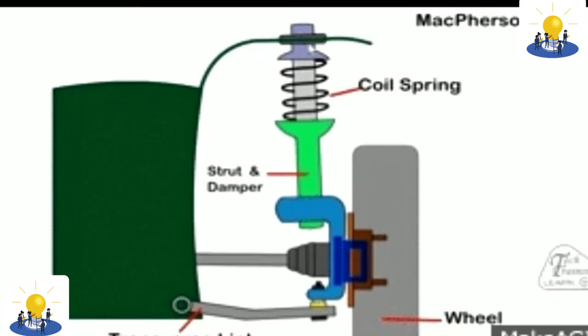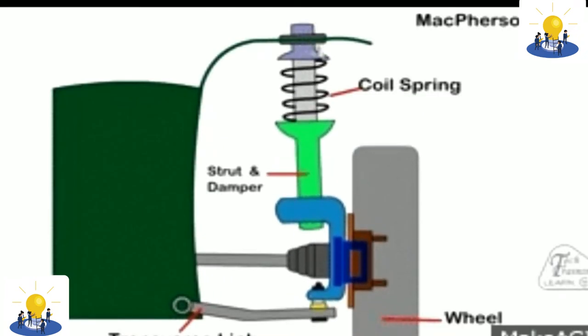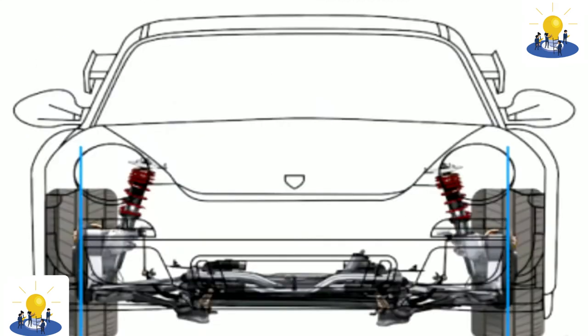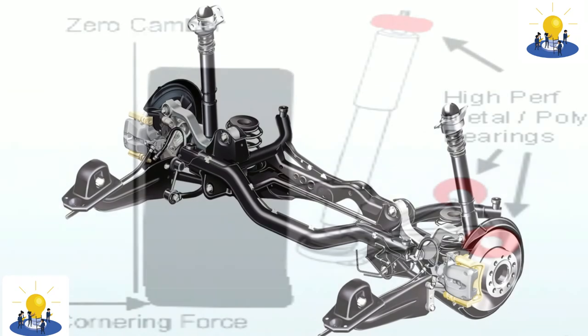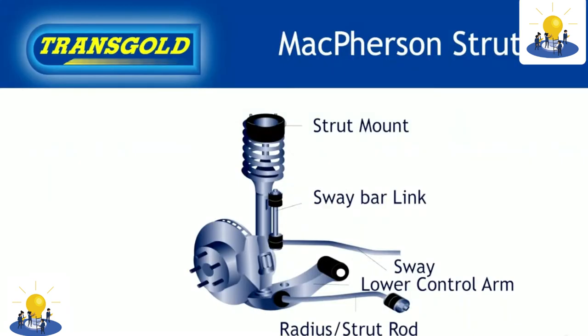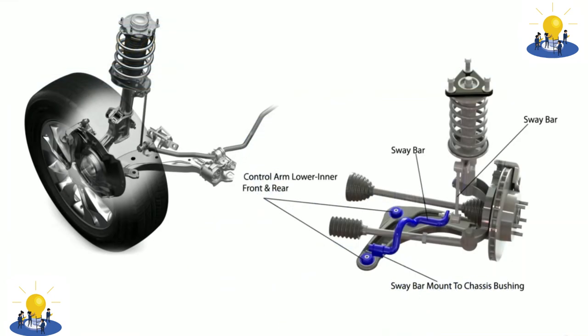Porsche 911, up until the 1989 model year 964, used a similar strut design without coil springs, using torsion bar suspension instead. After that point, all Porsche 911s have had front MacPherson struts, except the 992-based 911 GT3, which uses double wishbone.